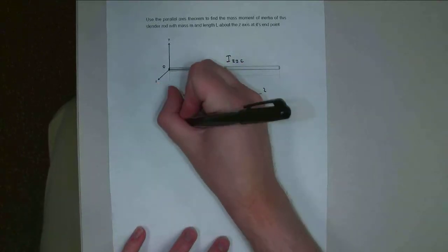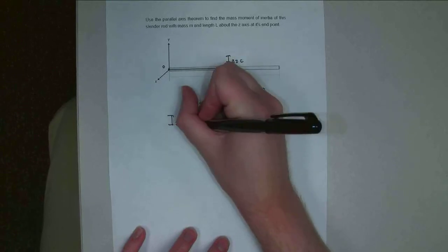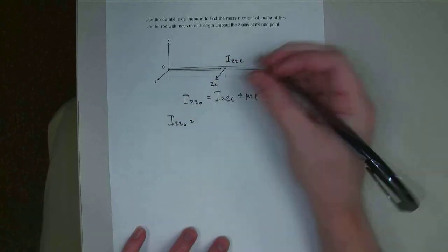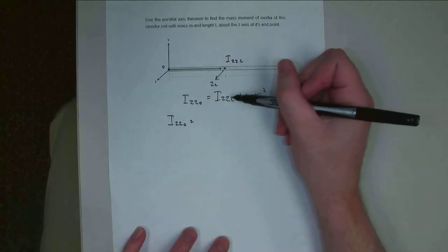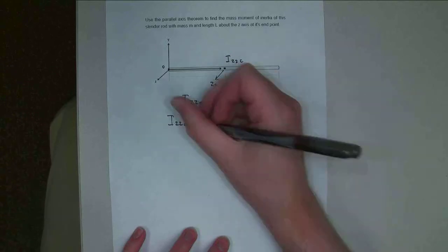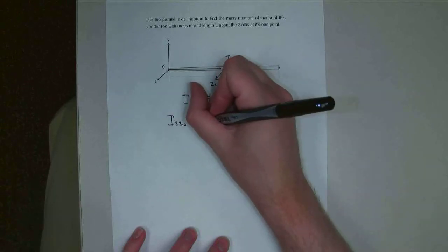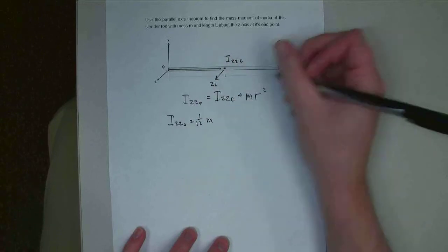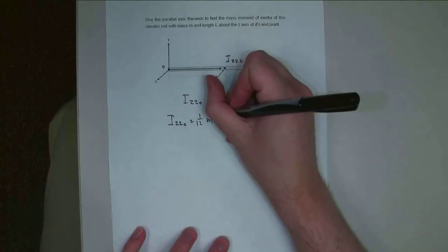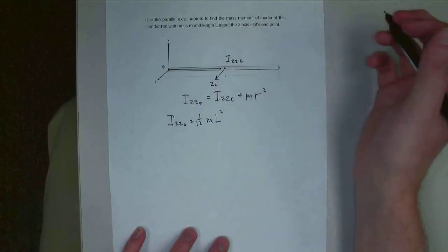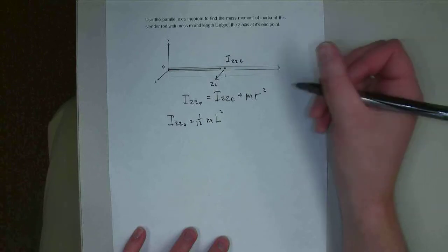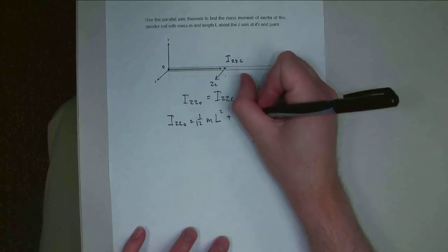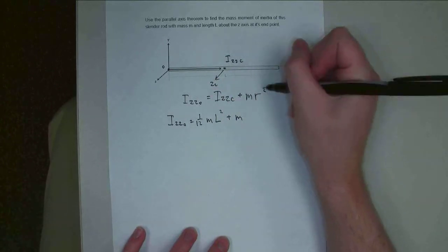Alright, so Izzo is going to be equal to the mass moment of inertia about the centroid. And if I look that up in the table, I should see that it's going to be 1/12 m, and it's got length l, l squared is what we have.